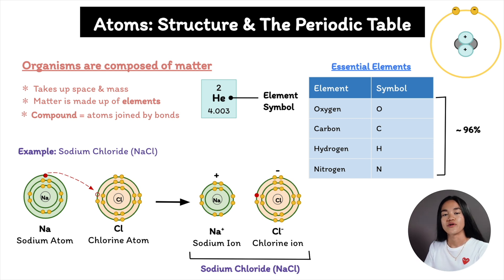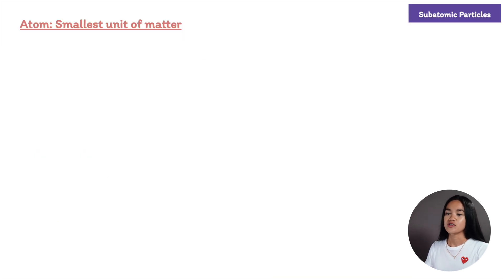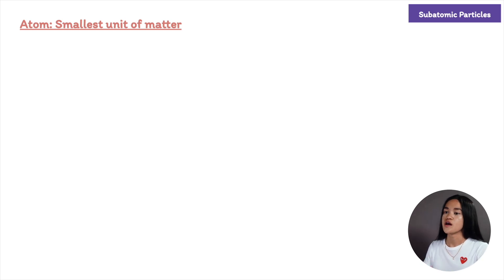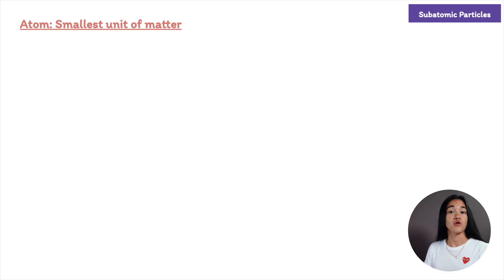Now let's break down the smallest unit of matter, which is an atom. Each element consists of a certain type of atom. Atoms are symbolized with the same abbreviation used for the element. For example, hydrogen's symbol is H and it stands for both the element hydrogen and a single hydrogen atom.